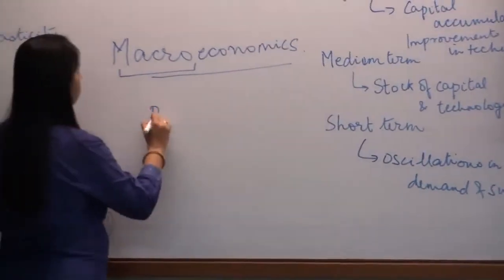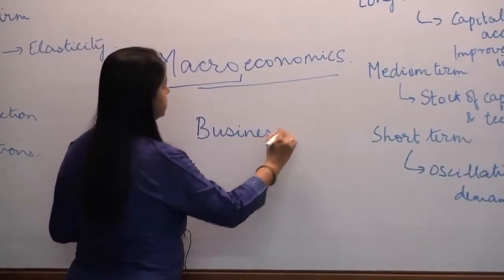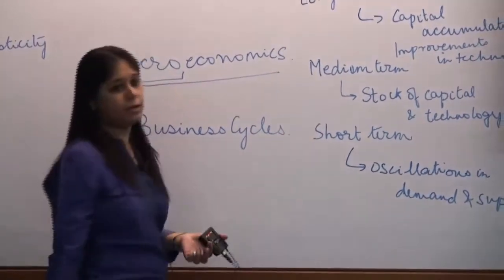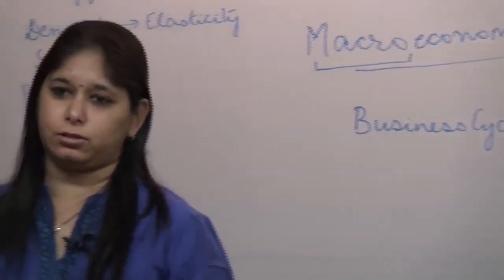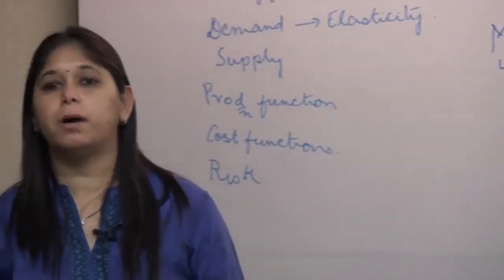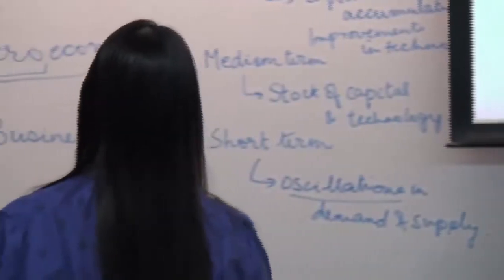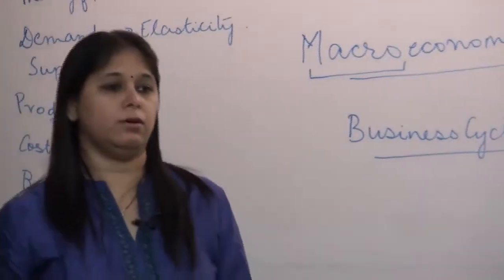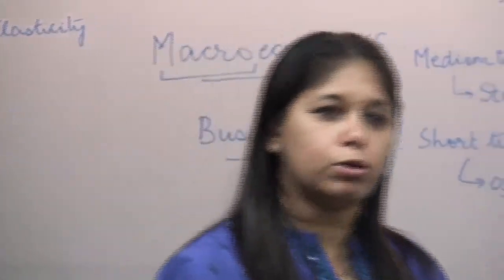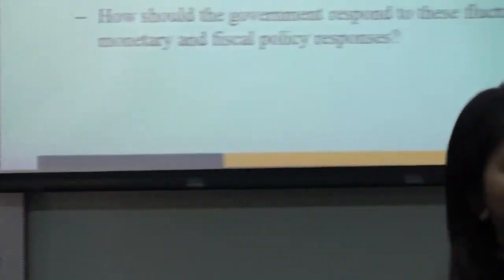These short-term oscillations give rise to a phenomenon in economics known as business cycles. These fluctuations are nothing but alternating phases of contraction and expansion. Every firm goes through these alternating phases, and every firm has to go through a business cycle.